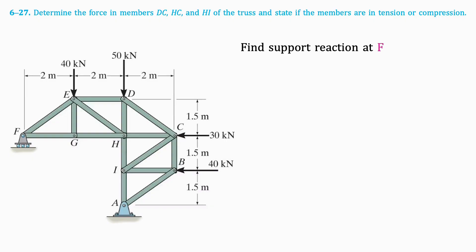First, we'll find the support reaction at point F, where there is a roller and therefore one reaction force perpendicular to the surface. We don't need to find the reactions at point A, since they will not be useful to us after cutting the truss.